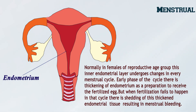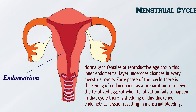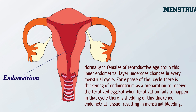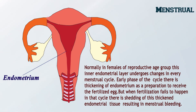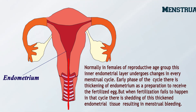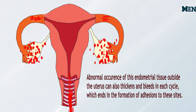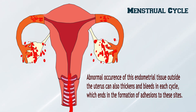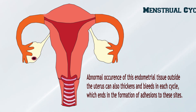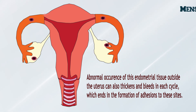Normally in females of reproductive age group, the inner endometrial layer undergoes changes in every menstrual cycle. In the early phase, there is thickening of the endometrium as preparation to receive the fertilized egg. When fertilization fails, there is shedding of this thickened endometrial tissue resulting in menstrual bleeding. Abnormal occurrence of this endometrial tissue outside the uterus can also thicken and bleed in each cycle, leading to adhesions at those sites.